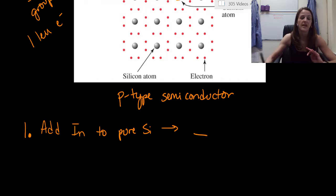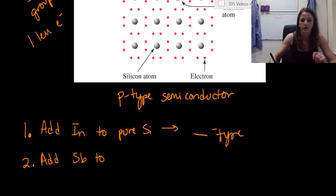So now, if we add indium, is that going to be an N-type, or is it going to be a P-type? And the second question is going to be, what happens if we add antimony to pure silicon? Again, we're trying to create either an N- or a P-type conductor, and so I want to know the difference.